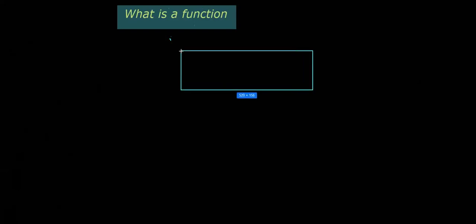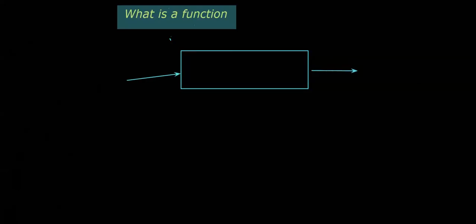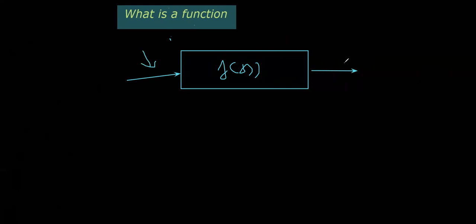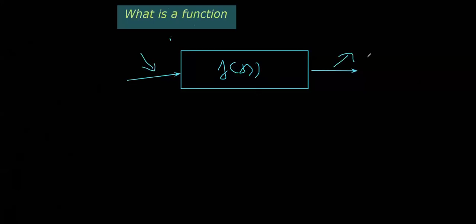What is a function? In the most abstract terms, a function is something that takes some input, processes it, and gives an output. You can visualize this as a kind of machine. The most common example is a food processor or a juicer: put in an apple and you get apple juice; put in oranges and you get orange juice. Whatever we feed in is called the input, and whatever comes out is called the output.